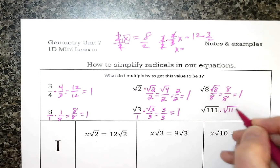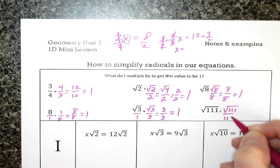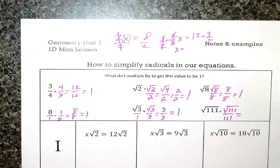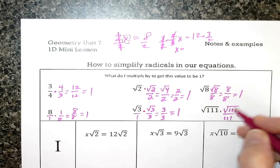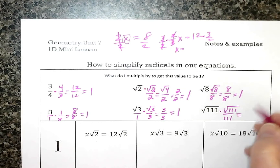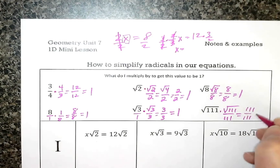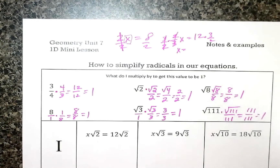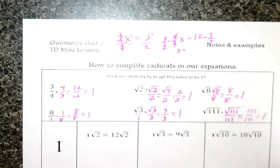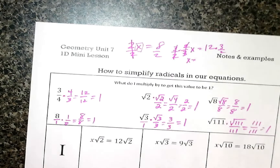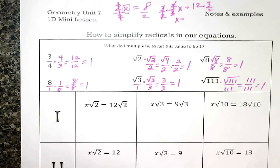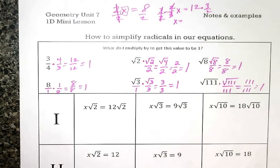Even with something like square root of 111 — square root of 111 times square root of 111 is 111, giving me 1. So let's look at three different scenarios of how this is going to work, going from easiest to a little harder.